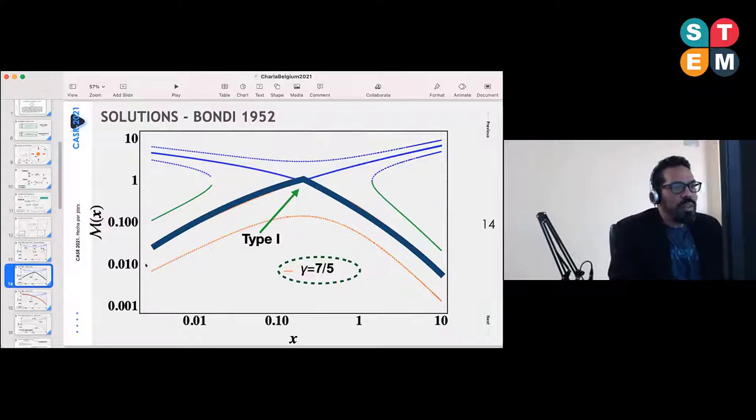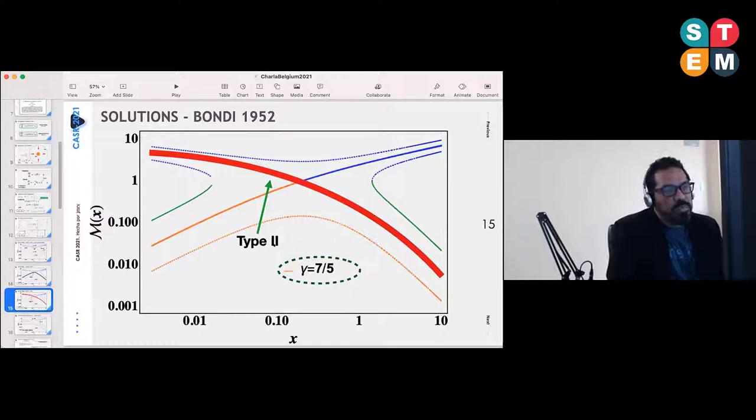In the special notation of Bondi 1952, there are several energetic arguments. It is in the very end the type two solution which is linking one of the subsonic parts with one of the supersonic parts—the most stable and physically possible solution, giving the accretion or Mach accretion profile we are going to present in the next few slides.